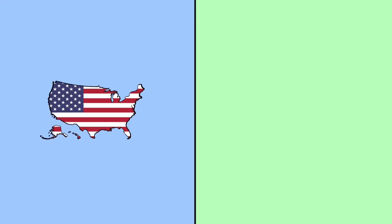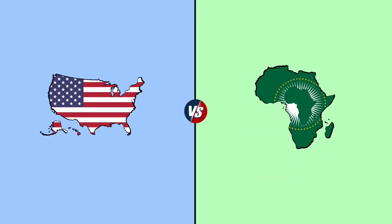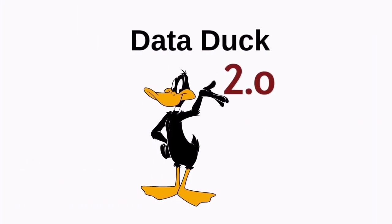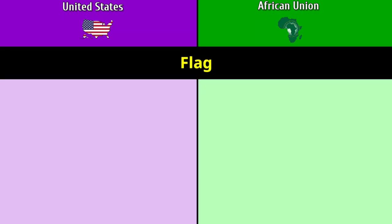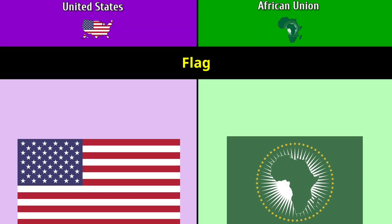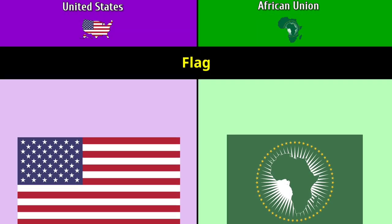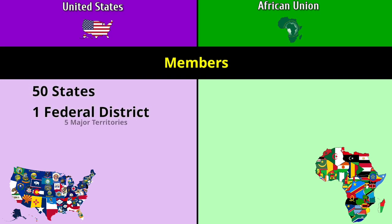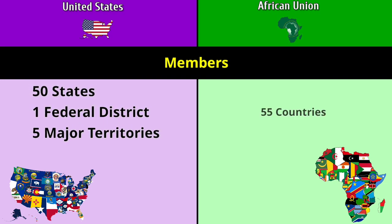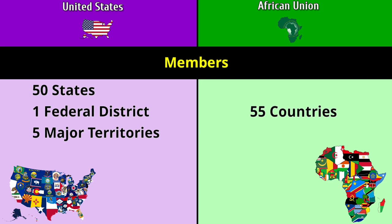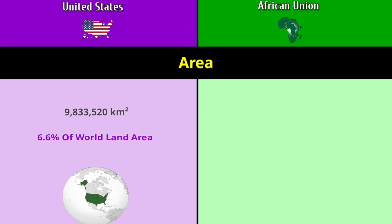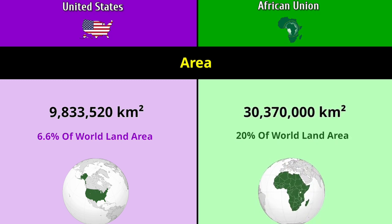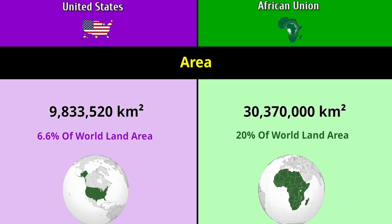Hello guys, today we see United States versus African Union. Let's welcome our YouTube channel Data Duck 2.0. Flag members: 50 states, 1 federal district, and 5 major territories for the US; 55 countries for the African Union. Area: 9.83 million square kilometers versus 30.37 million square kilometers.